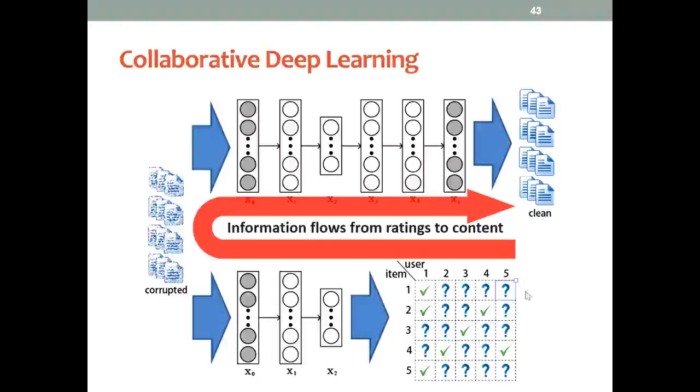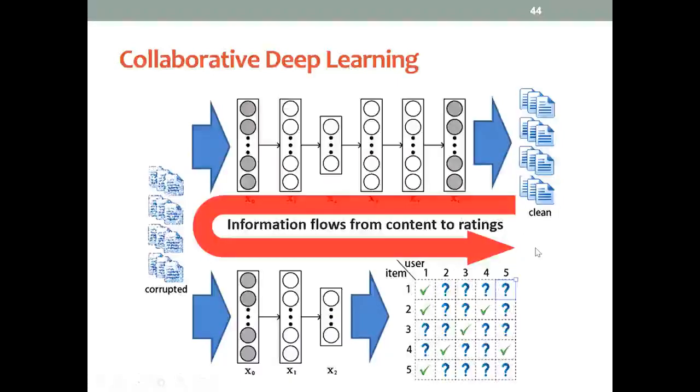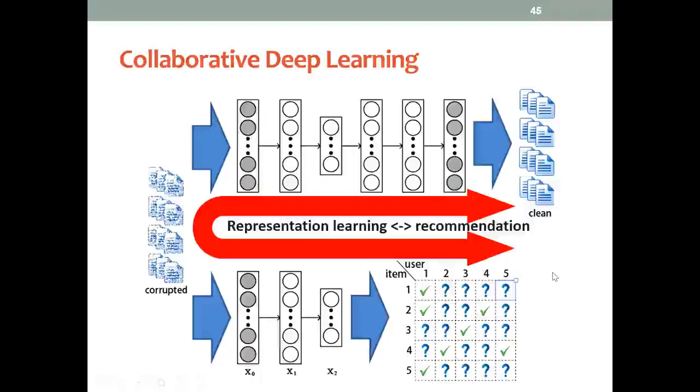It will flow from the ratings to the content, which means the content is actually adapting to the ratings. It will also flow from the content to the ratings, which means the learned representation is used to boost the recommendation performance. In a word, representation learning and recommendation actually happen together and benefit from each other.